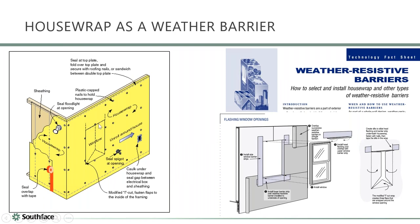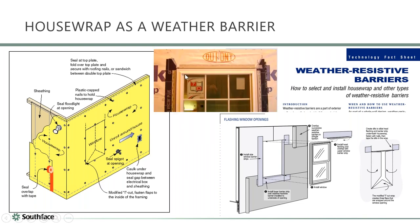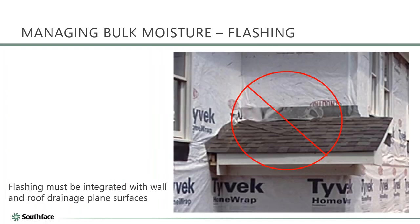The correct method: cut an upside-down Y, fold the left, right, and bottom flaps inward, cut slits, fold the top flap up, set the window, then lap the house wrap over the top of the window flange — just like shingles shedding water downward. The flashing should always be behind the house wrap to maintain the drainage plane and prevent water from getting behind the cladding system.